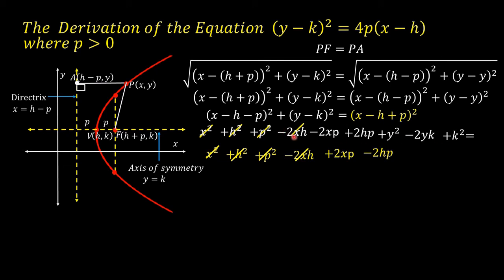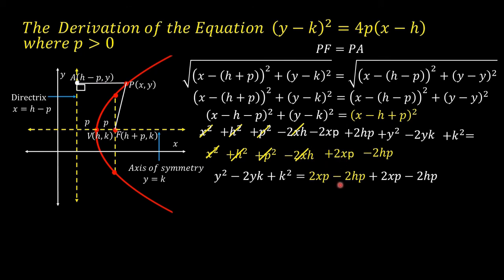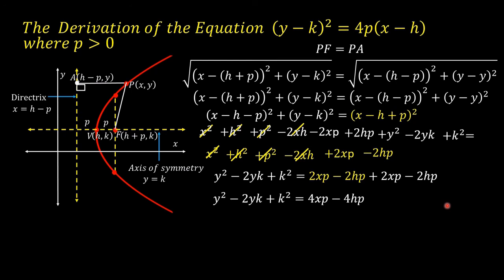After cancellations, we have y² − 2yk + k² = 2xp − 2hp on one side, with −2xp becoming positive and 2hp becoming negative when transposed. Combining similar terms gives y² − 2yk + k² = 4xp − 4hp.